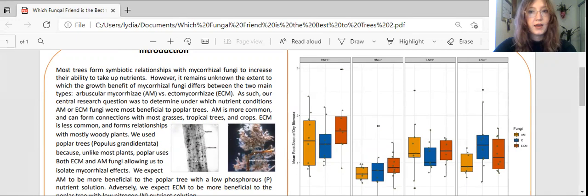AM is more common than ECM and lives in soils with low phosphorus levels. ECM is less common and lives in soil with low nitrogen levels. Most plants don't associate with both of these types of mycorrhiza.